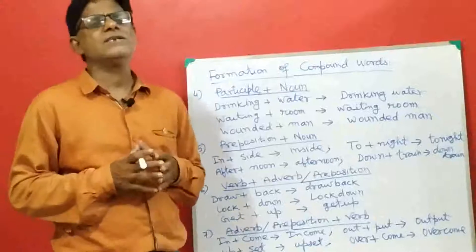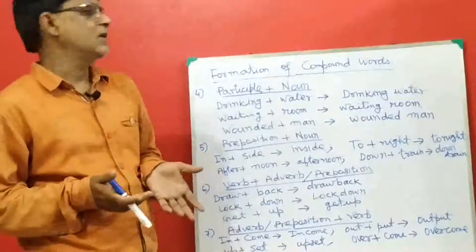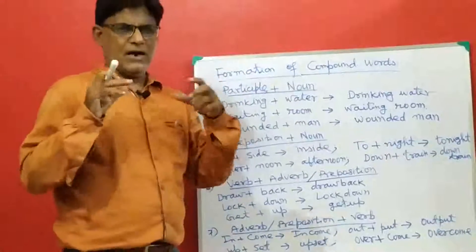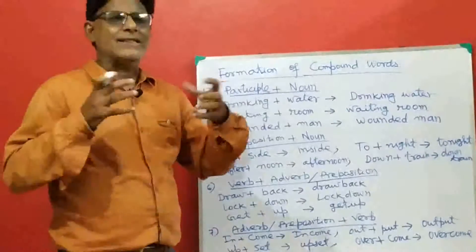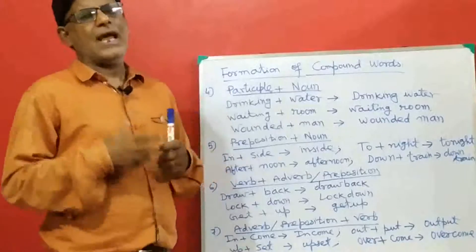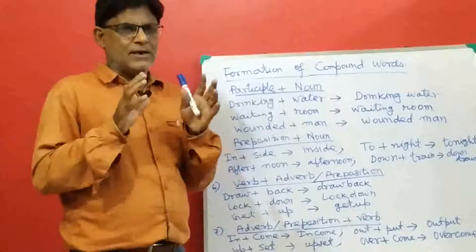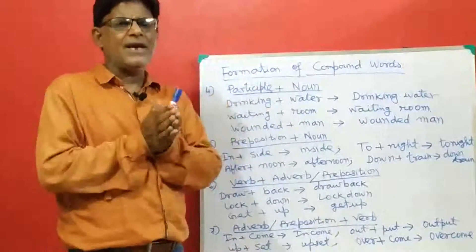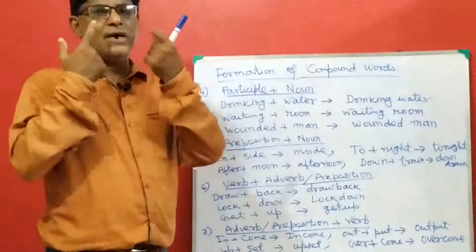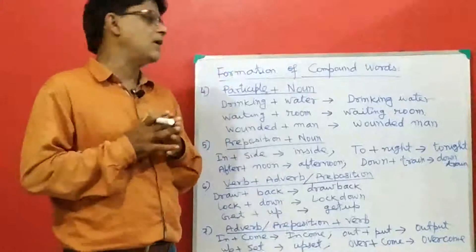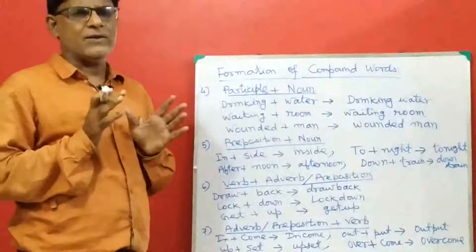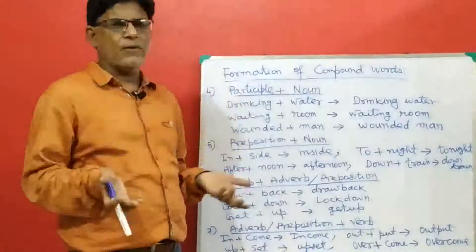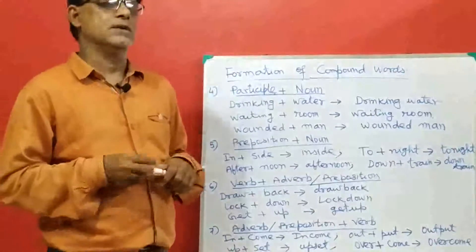So all these are the methods of forming compound words. A compound word is a single word made up of two words having a specific meaning. The individual words present in a compound word may have different meanings, but when together in a compound word, they refer to a specific meaning. In today's class, I have taught you what a compound word is and how compound words are formed. Thank you very much.